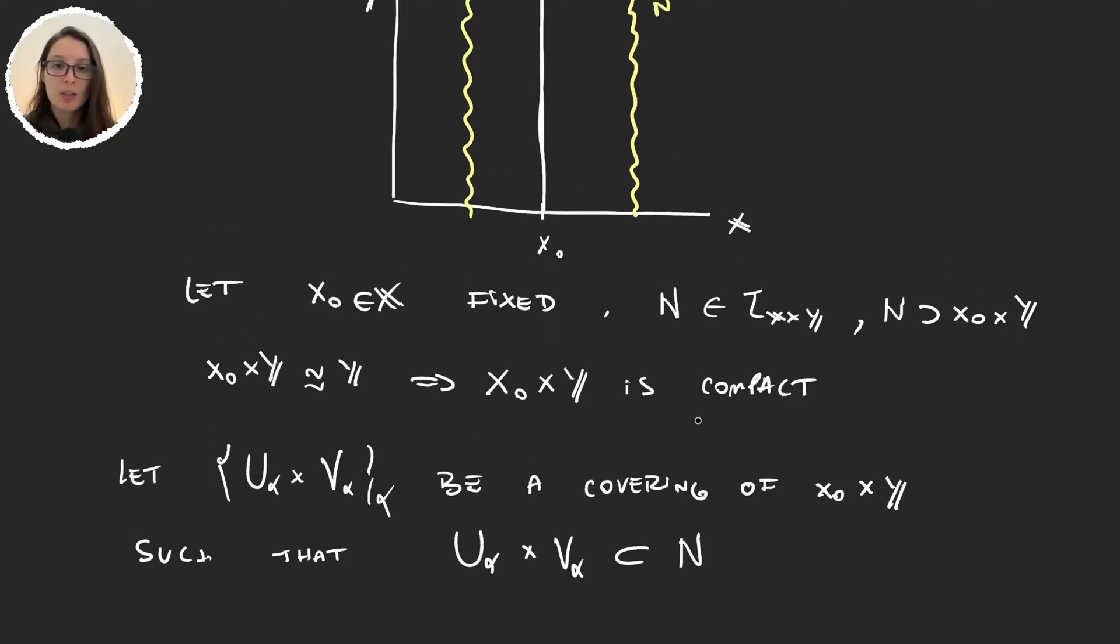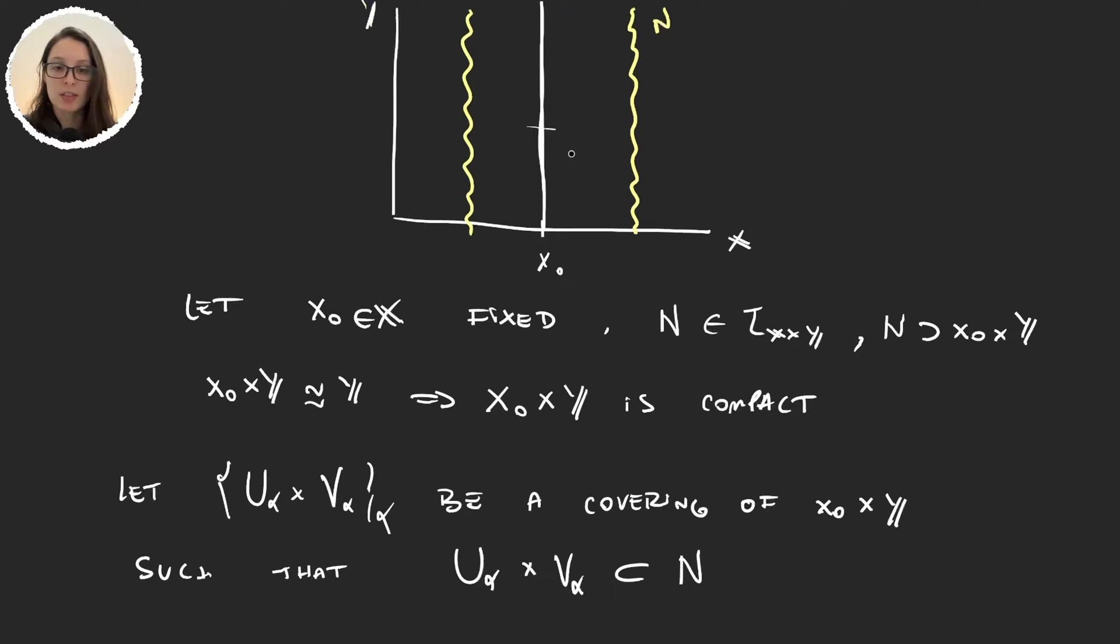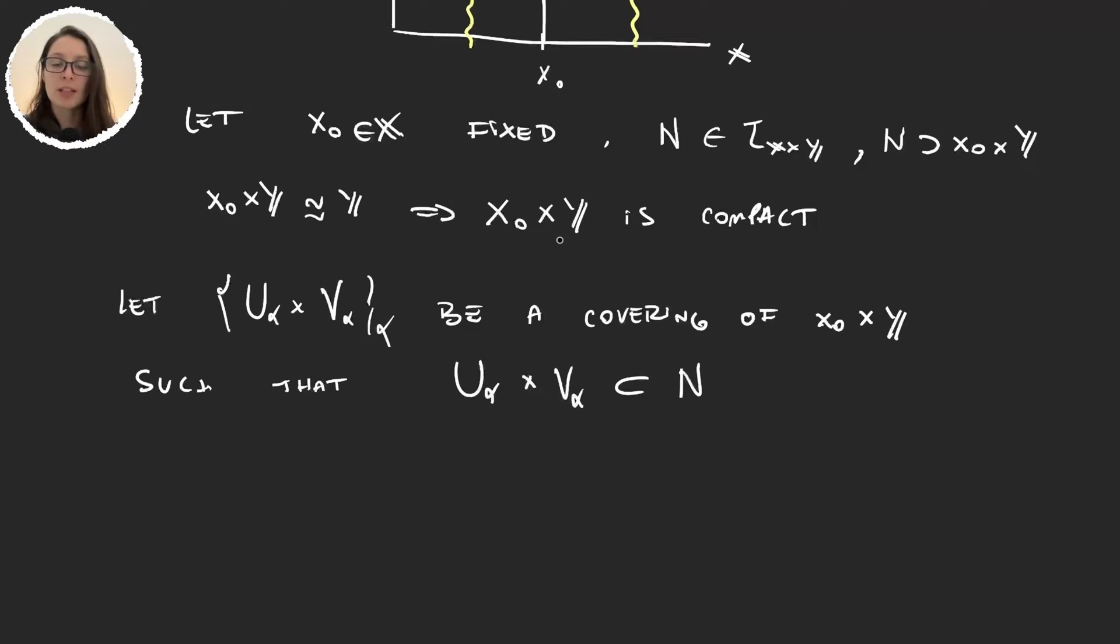such that Uα times Vα is a subset of N, so Uα times Vα are going to be sets in here, and now because x₀ times Y is compact, there will exist a finite subcover.